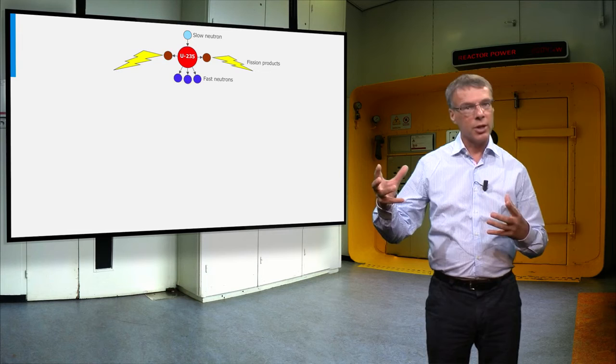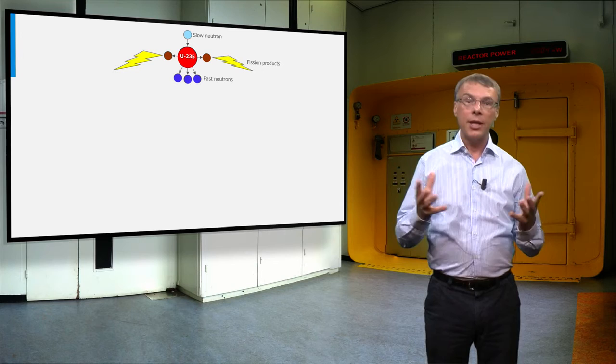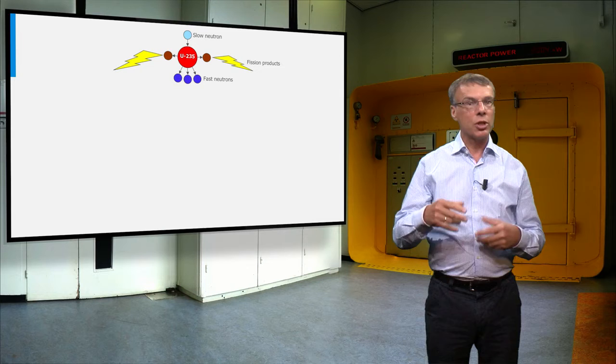If a slow neutron hits a U-235 nucleus, it will lead in 9 out of 10 cases to nuclear fission. In this process two fission fragments are produced, the brown bullets.